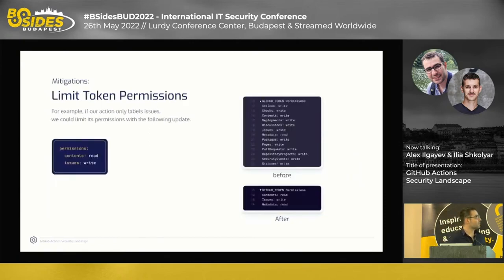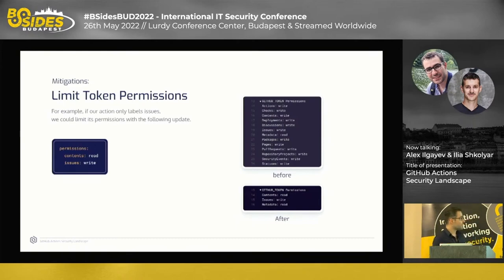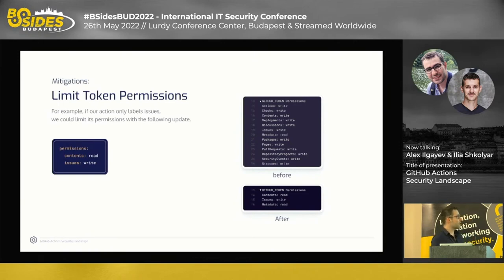Another post-exploitation mitigation is to limit token permissions. You can add a 'permissions' tag inside the workflow that defines the maximum level of permissions the GitHub token receives. Even if an attacker manages to run code on your build, he will be limited. For example, in our sample we only need read permissions for contents to clone the code, and write permissions for issues to update the label — this is sufficient.